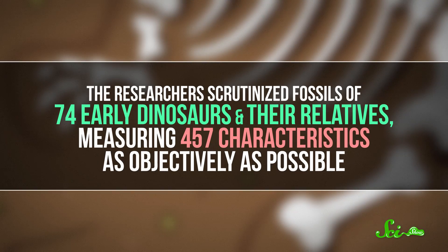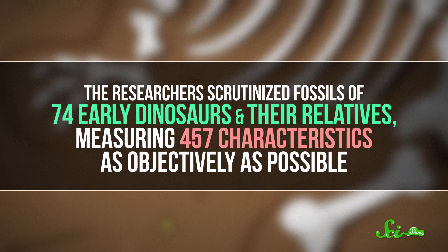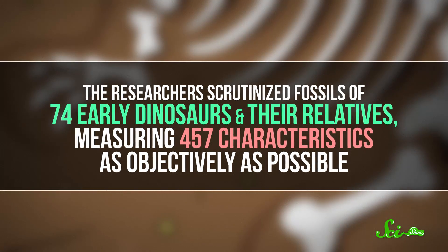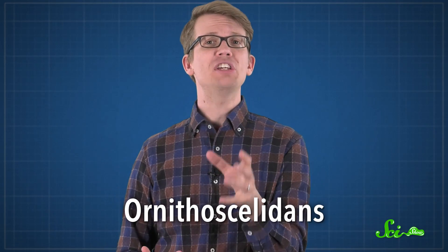To put this simple classification system to the test, the researchers scrutinized fossils of 74 early dinosaurs and their relatives, measuring 457 characteristics as objectively as possible. Using some heavyweight computation power, they suggest that theropods like T-Rex fit better with the Ornithischians than their traditionally assigned group. This new group, which they called Ornithoscelidans,